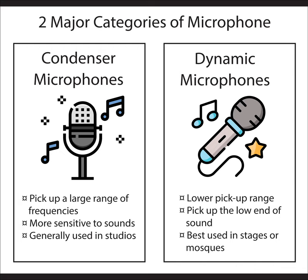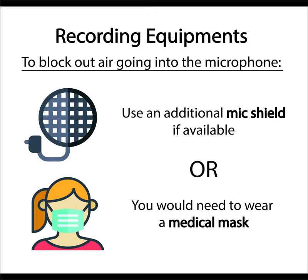There are numerous microphone devices available today which fall under two major categories. First category: Condenser Microphone. Condenser microphones pick up a large range of frequencies and are more sensitive to sounds than dynamic microphones, thereby increasing the clarity of the sound. Condenser microphones are for the most part used in studios. Second category: Dynamic Microphone. Dynamic microphones pick up the low end of sounds and may have a low pickup range. Dynamic microphones are best used on stages. Odds are, most podcasters or voiceover artists would approach the condenser microphone as opposed to the dynamic microphone.